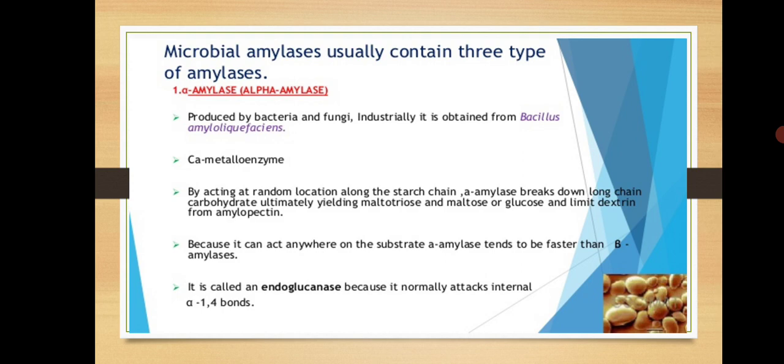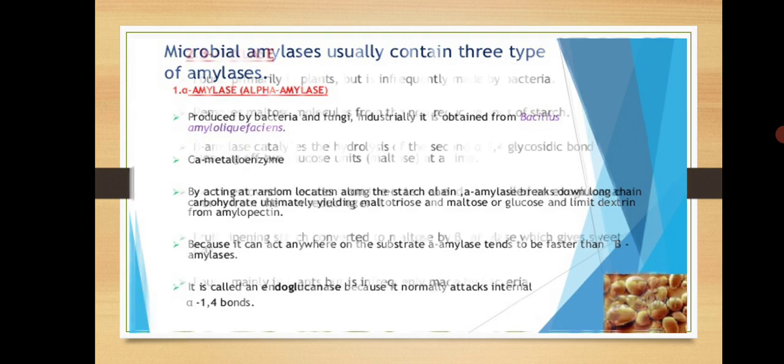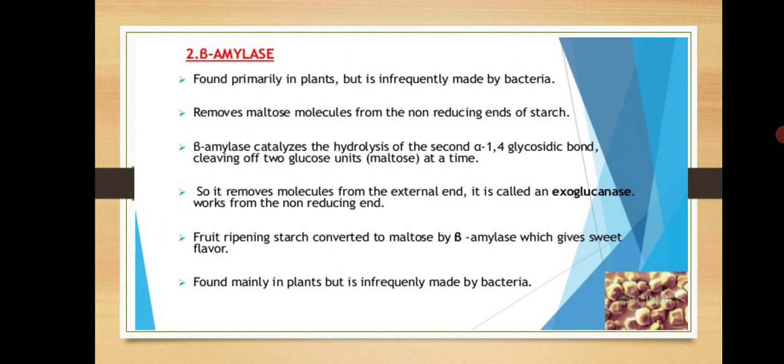Alpha amylase is also called endoglucanase because it normally attacks internal alpha-1,4 bonds. While it cleaves randomly, it mostly attacks internal bonds — the alpha-1,4 bonds that join two glucose units together. It is therefore called an endo amylase, a hydrolysis enzyme that attacks mostly at the interior of the glucan chain. Beta amylase, on the other hand, is an exo amylase.